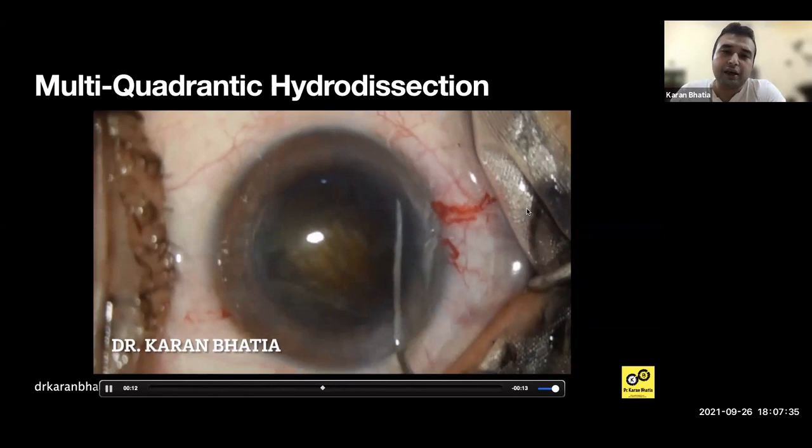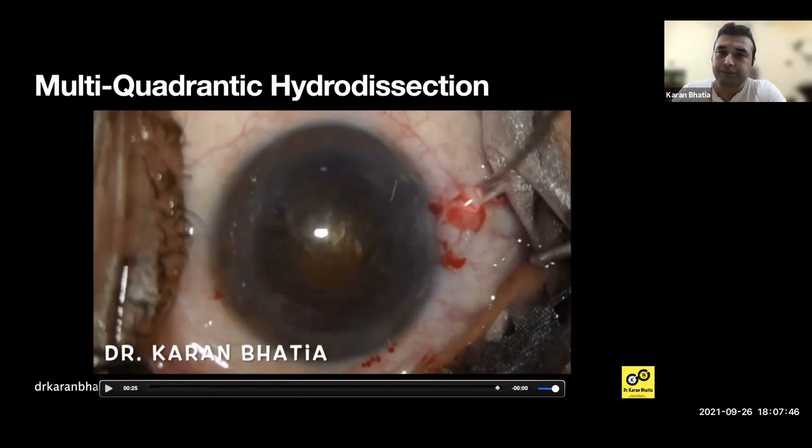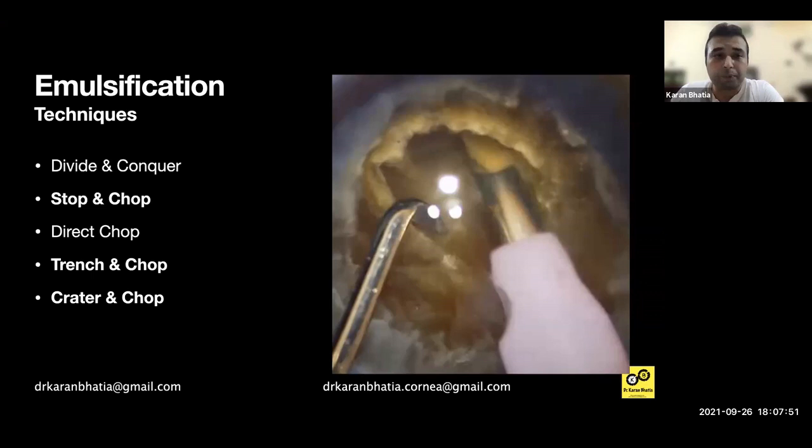After injecting OVD, you need to check for the rotation of the nucleus. If it is really rotating, it makes the job much easier. For emulsification, you have various techniques: divide and conquer, stop and chop, direct chop, trench and chop, crater and chop, and multiple modifications of these.